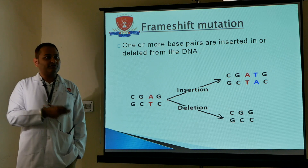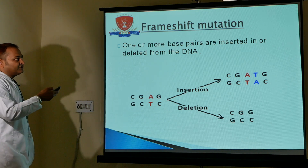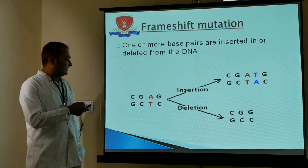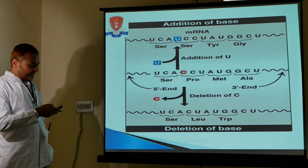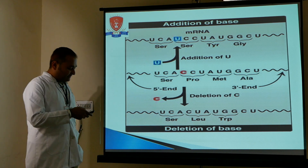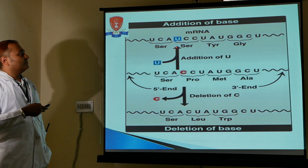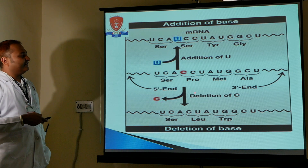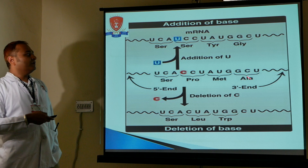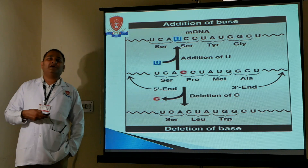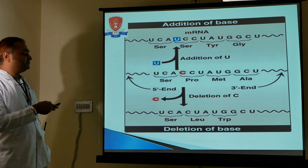In frameshift mutation, one or more base pairs are inserted or deleted in the DNA. As shown in the diagram, if a U is added, the sequence changes; if a C is deleted, the sequence changes. A change in even one base pair alters the entire downstream protein sequence.